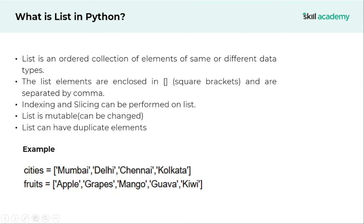Here are a few examples of lists. In the first instance we have a list of cities — Mumbai, Delhi, Chennai and Kolkata. In the second instance I have a list of fruits — apple, grapes, mango, guava and kiwi. We have to be mindful about the data type of the elements. If the data type is a string, the list element needs to be enclosed in single, double or triple quotes. But if the data type is an integer, float, boolean, none, or complex number, we don't need to mention quotes.